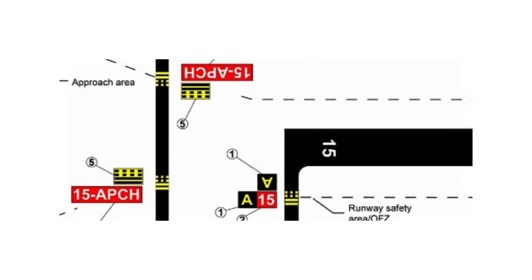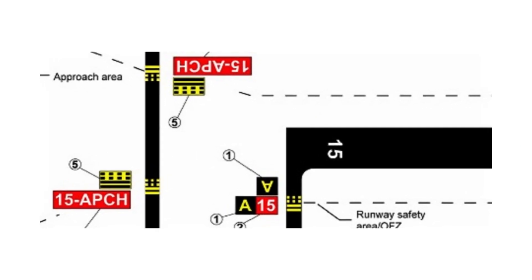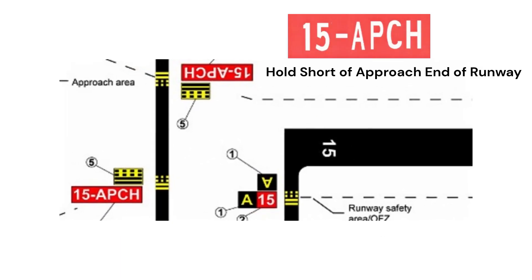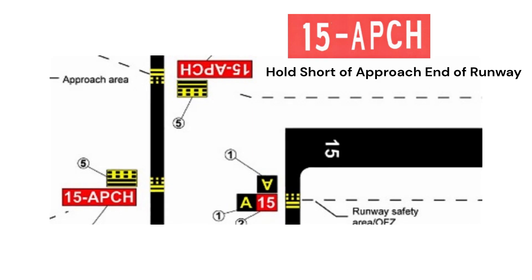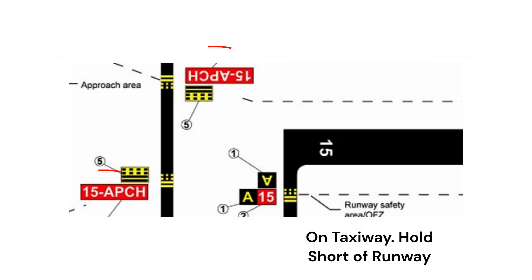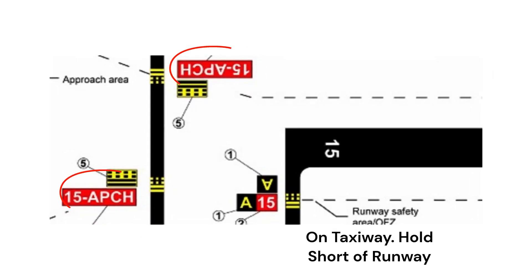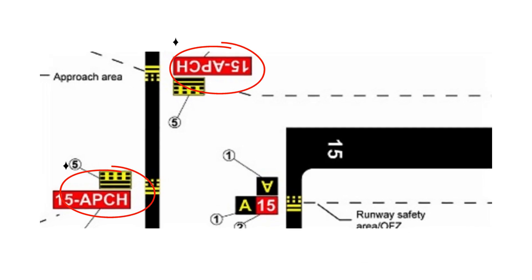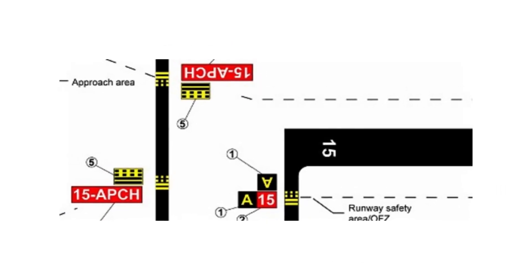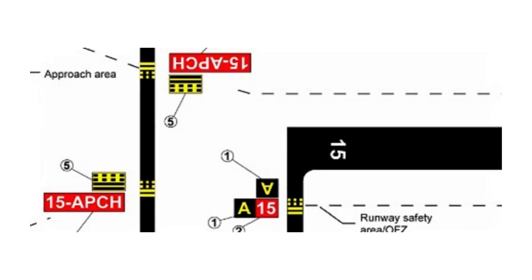A red sign with white letters with a number followed by the abbreviation APCH indicates an approach holding sign and is a signal to pilots to hold short of the approach end of the runway. In this example, a pilot would need to hold short of the approach end of runway 1-5 until receiving ATC clearance.